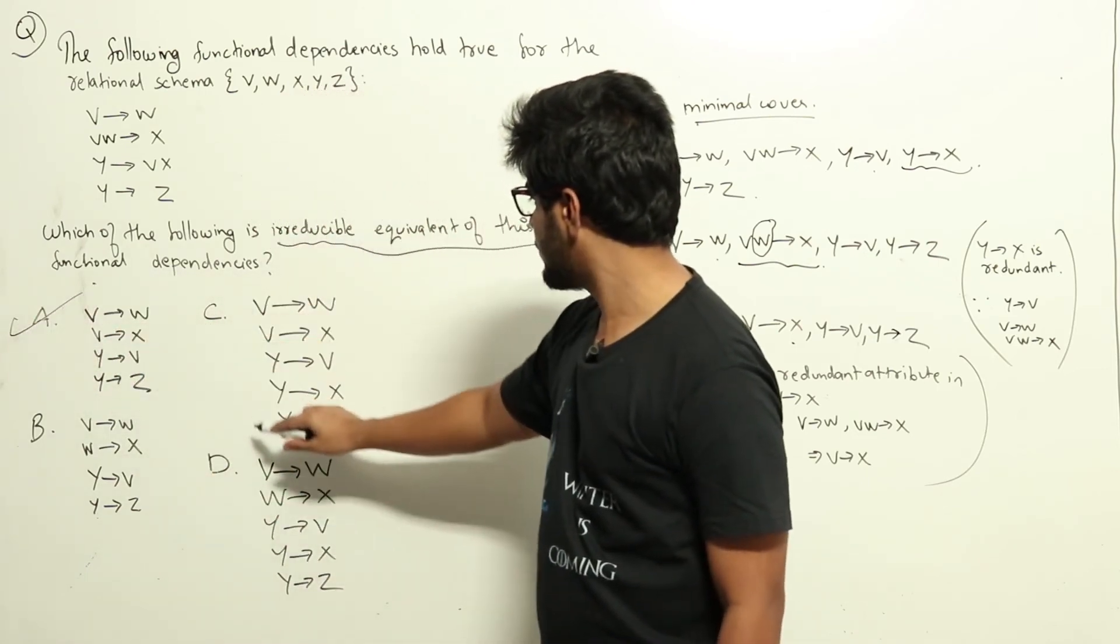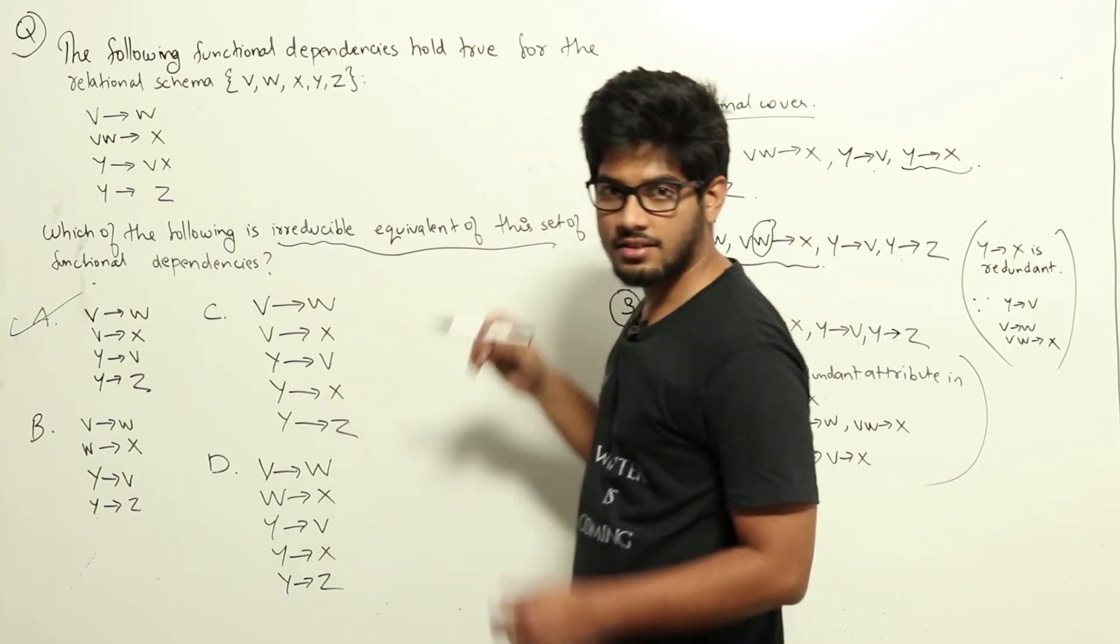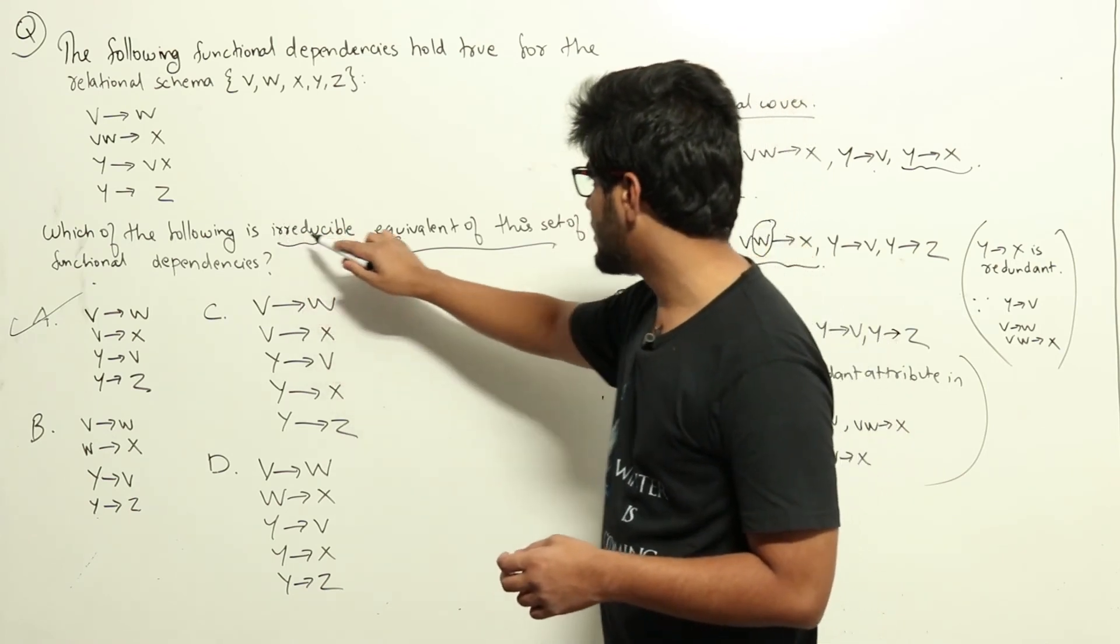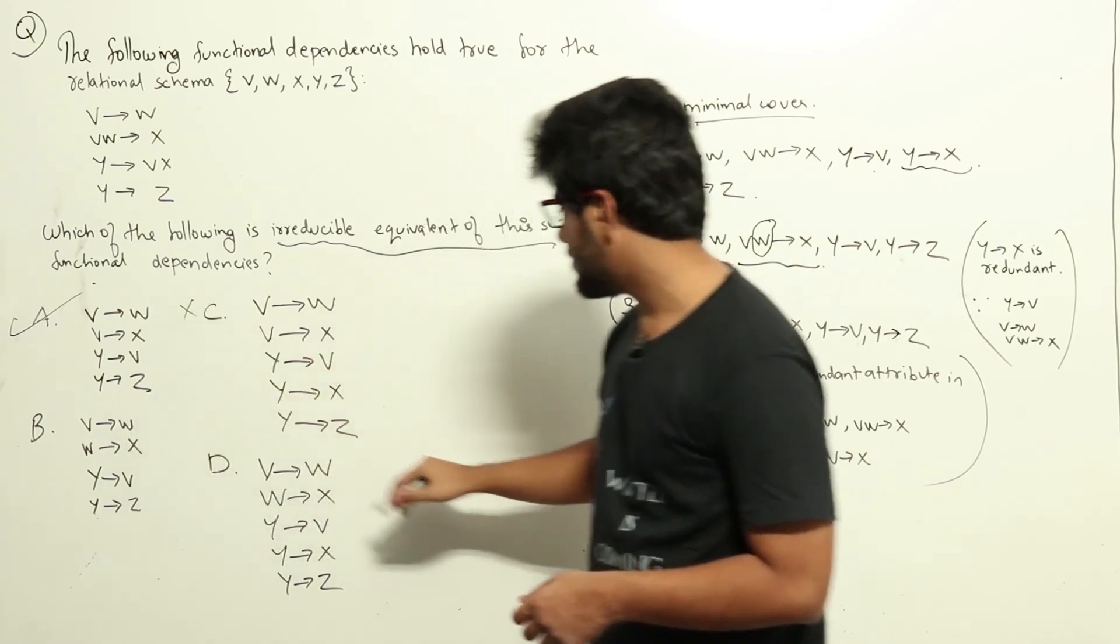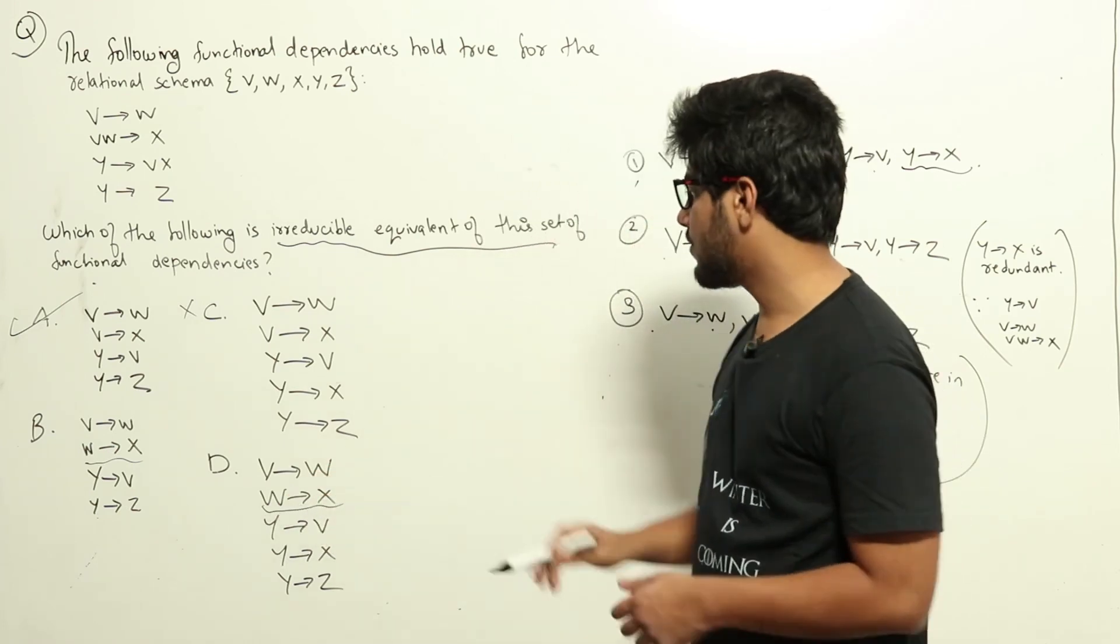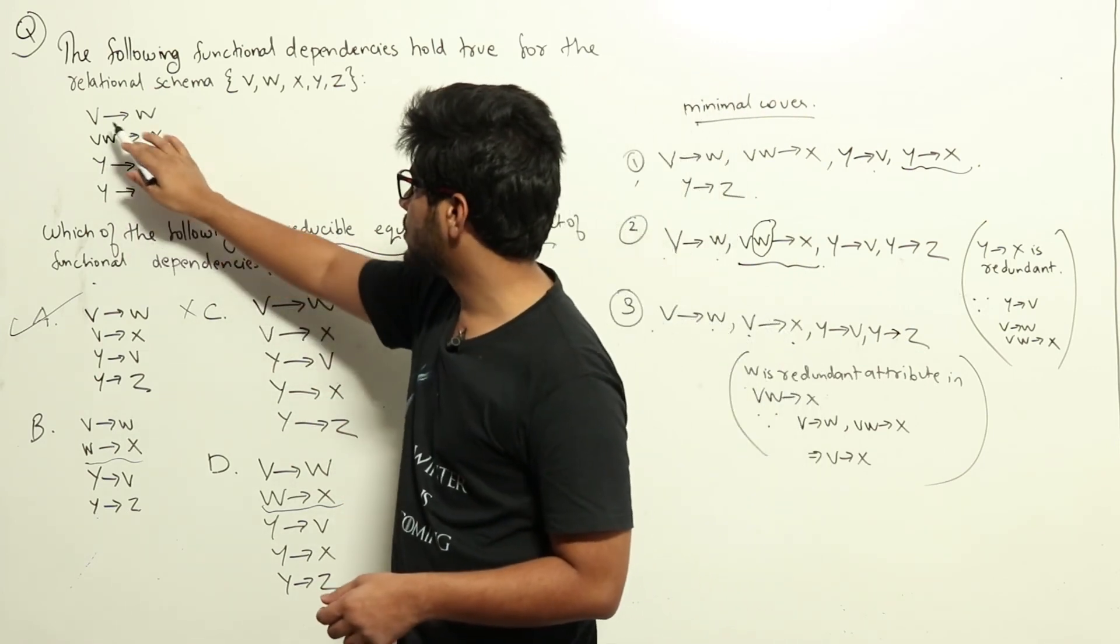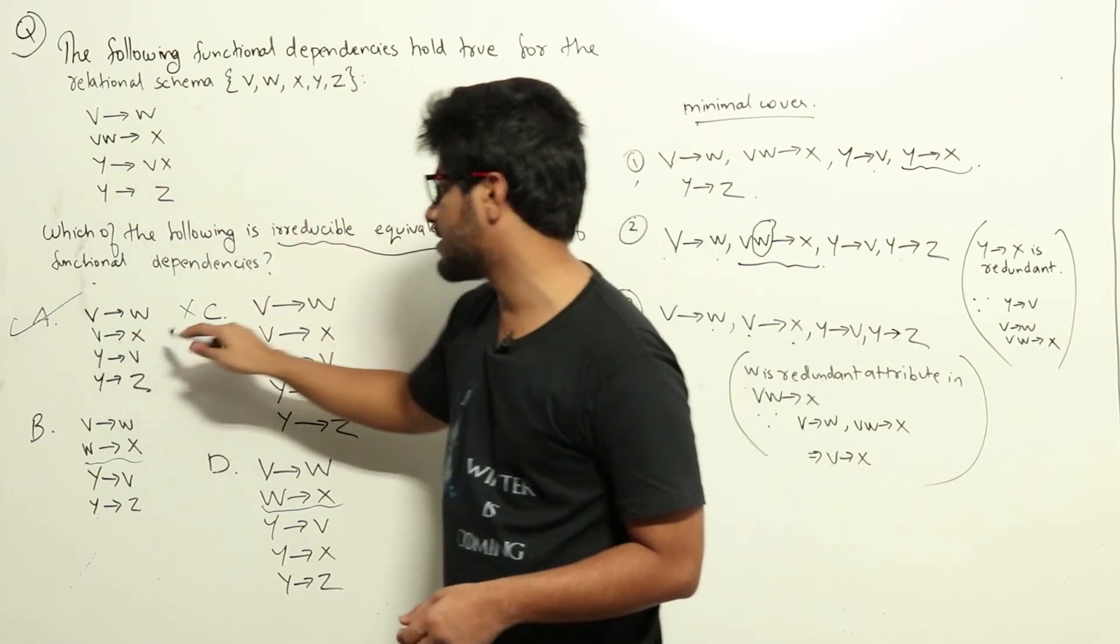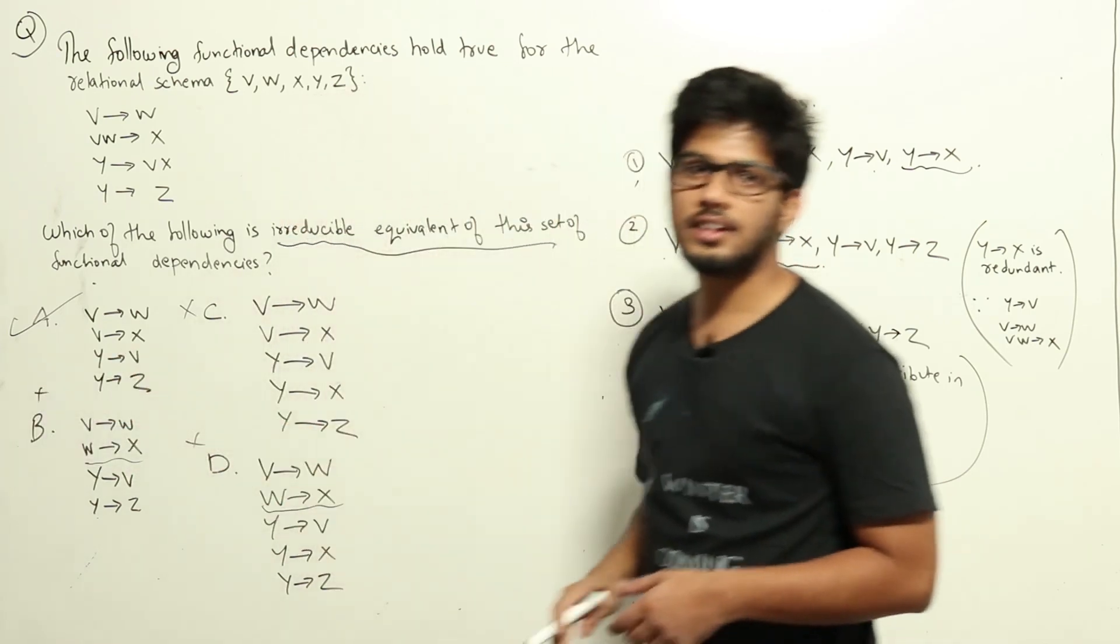Option C is also a cover but includes Y gives X. As I've shown, this is a redundant functional dependency, so it's not an irreducible equivalent. Options B and D have W gives X written directly. That is wrong; W can never give X alone. W and V together can give X, but we can remove W because V already gives W. That's why we write it as V gives X instead of VW gives X. So B and D are also wrong. A is the right answer.